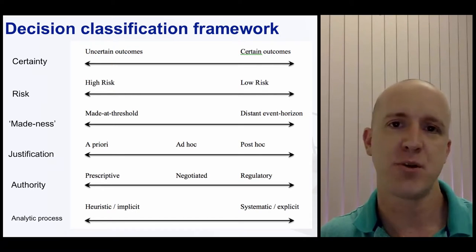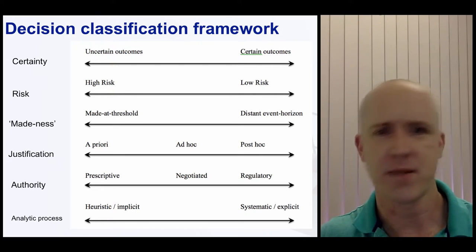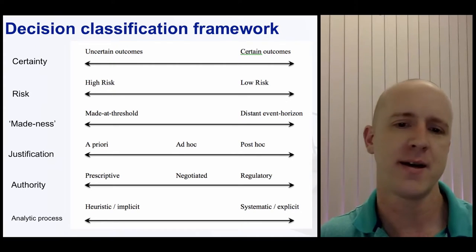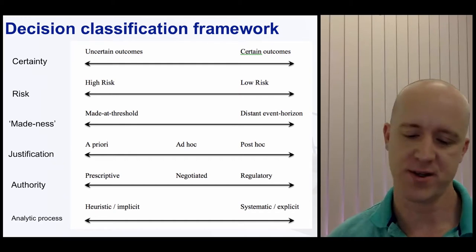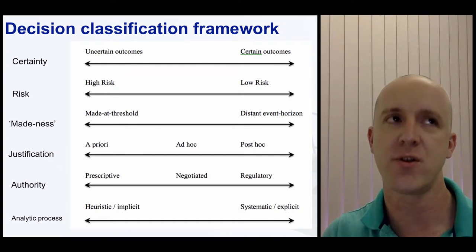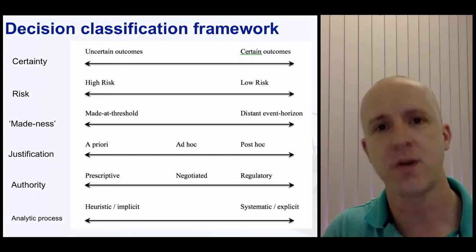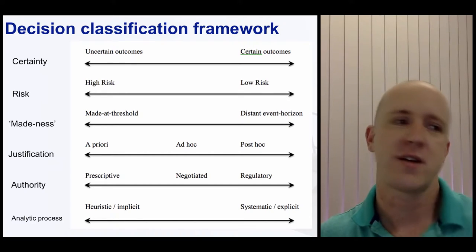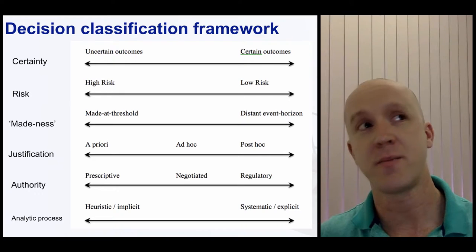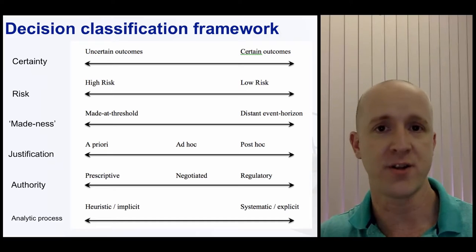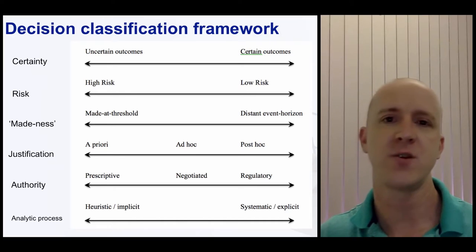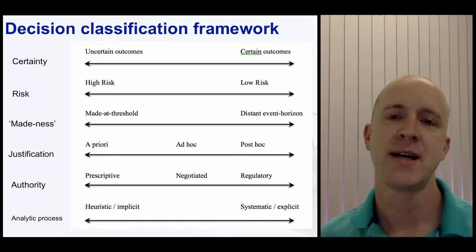The authority angle: is it a prescriptive decision where you say 'I'm in charge, I'm the expert, you must do as I say'? Is there a halfway point where you negotiate — 'here are some options, which one do you like?' — but ultimately you're agreeing a course of action. Or is it this kind of 'you work it out for yourself, you've got this, but I'll keep an eye on what you decide to do as the client' — what I'd call a regulatory approach, where you're keeping checks on what they do and decide.